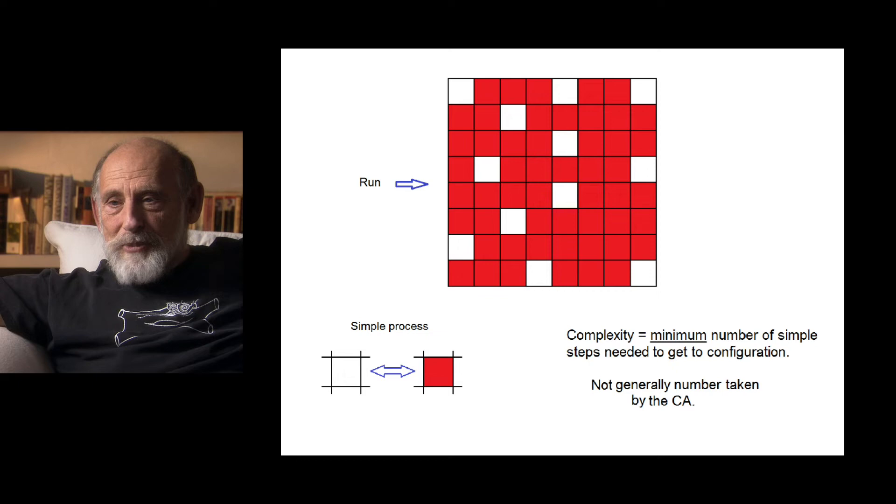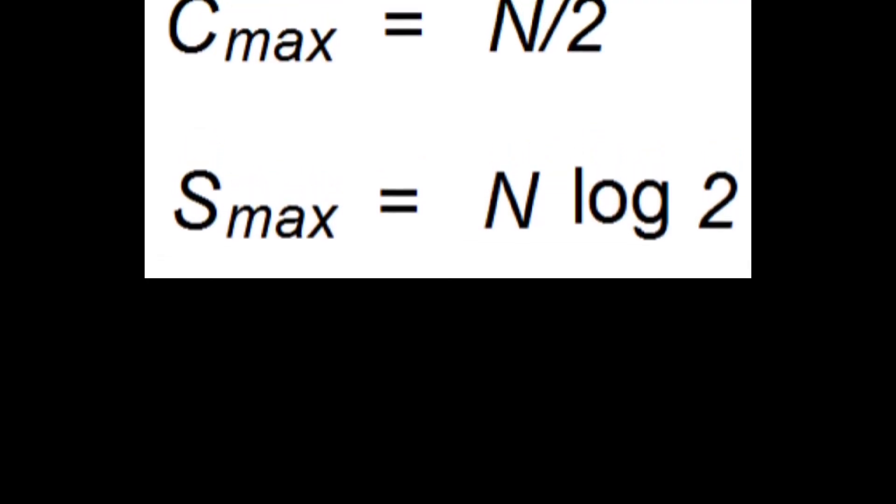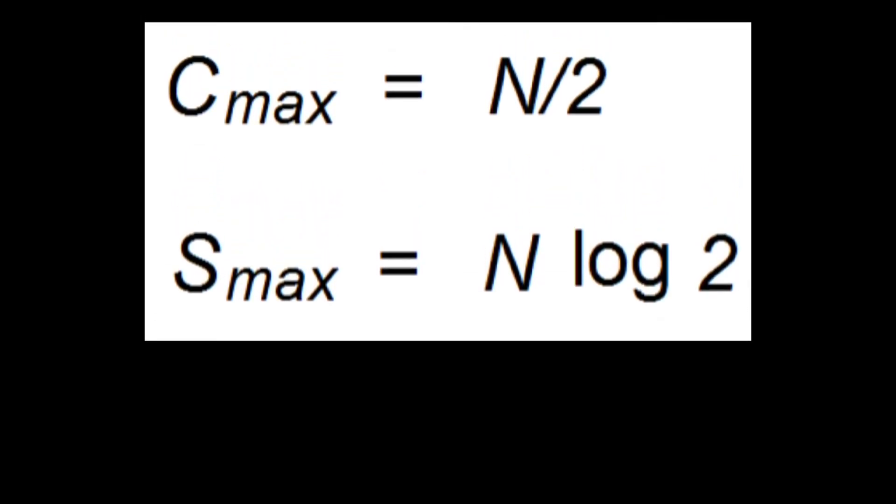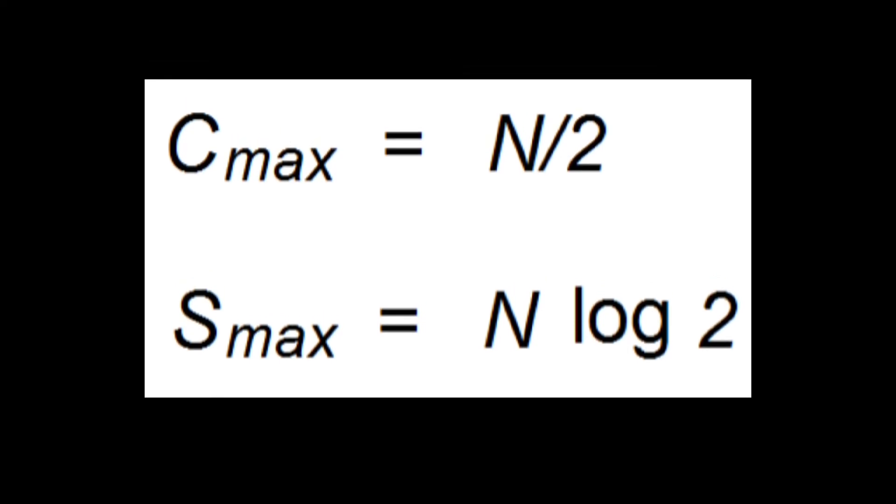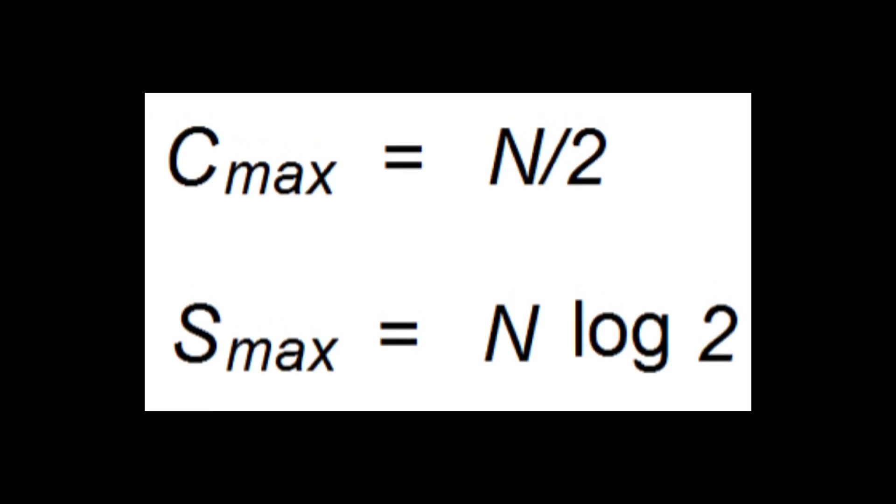Now, we're not interested in the number of steps actually taken by the cellular automata. The cellular automata might go some crazy route to get to this configuration. The complexity of it is not defined by how long the cellular automata takes to get to that configuration. It's defined by what is the minimum possible number of steps that could have gotten you to this configuration. And this definition is fairly standard. If you are speaking in classical terms, complexity and entropy has similar expressions. The maximum complexity is of order n and maximum entropy is also of order n. But this notion of classical computing is very misleading when it comes to quantum.